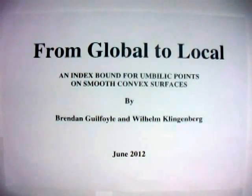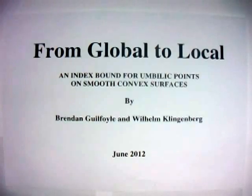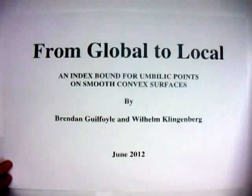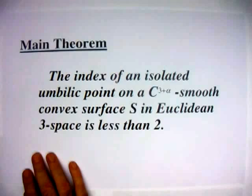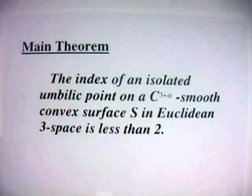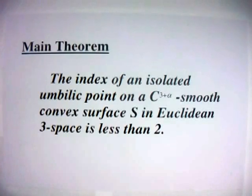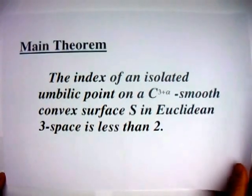The purpose of this video is to go through the main result from the paper 'From Global to Local: An Index Bound for Umbilic Points on Smooth Convex Surfaces' by myself and Wilhelm Klingenberg, which was recently posted to the archive. The main result is the theorem that the index of an isolated umbilic point on a C^{3+α} smooth convex surface in Euclidean three-space is less than two. Here C^{3+α} is the standard Hölder space, but you can replace that by smooth and the result certainly follows. In this video, we give a brief overview of the proof.